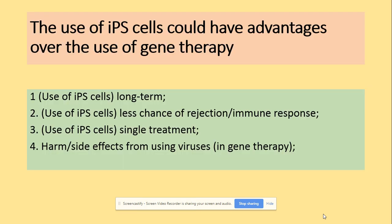The uses of induced pluripotent cells include long-term applications, a reduced chance of immune response, and the possibility of use as a single treatment. However, there can be harm or side effects from viruses, as these cells can be used in gene therapy. That's everything for stem cells — see you later.